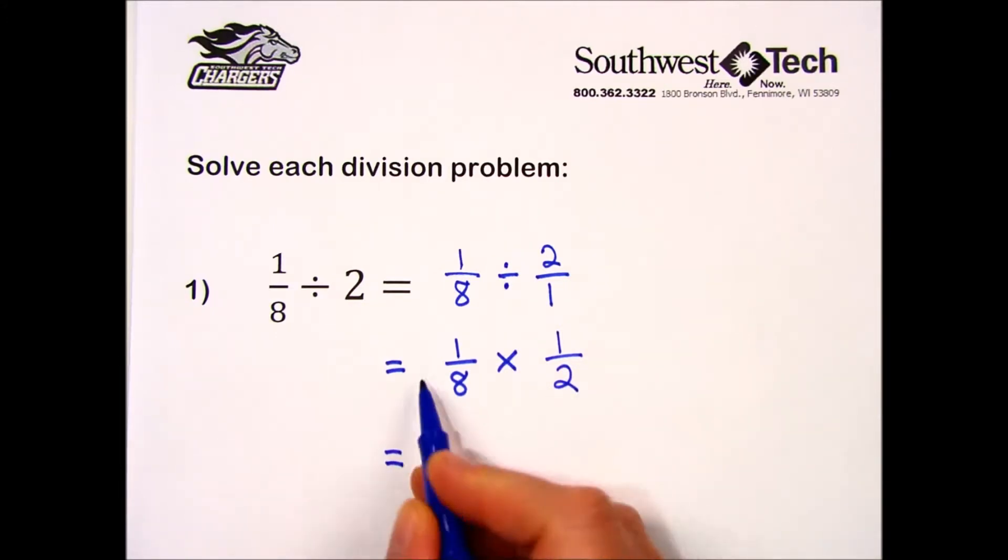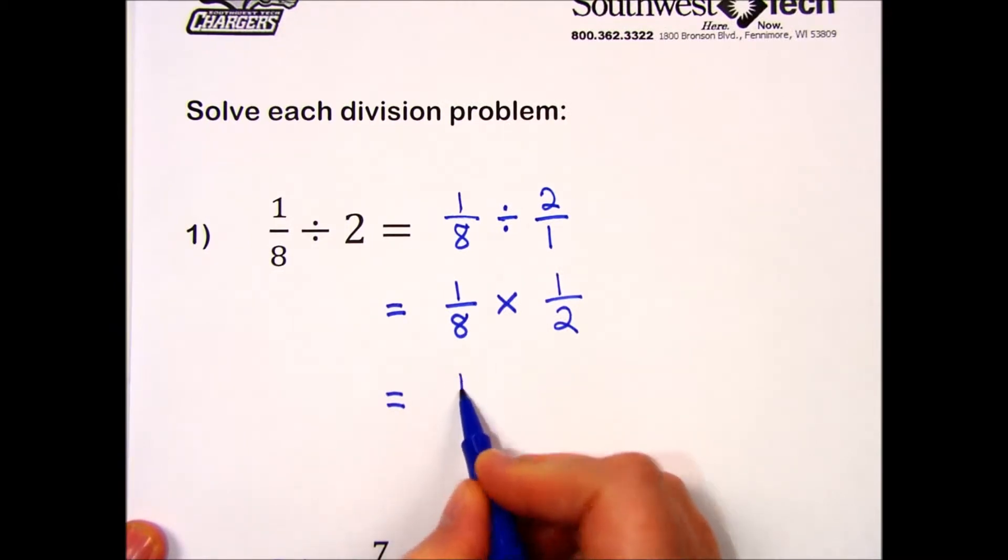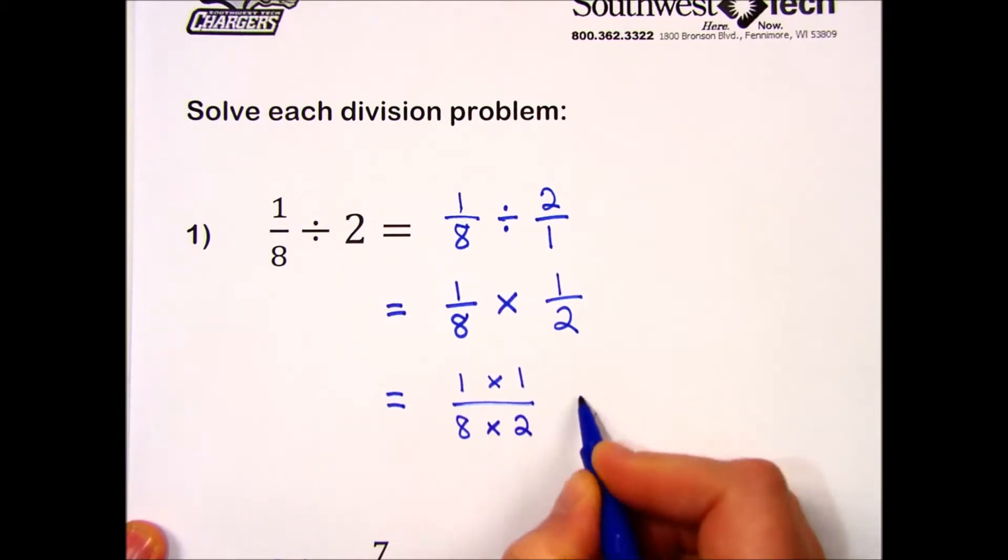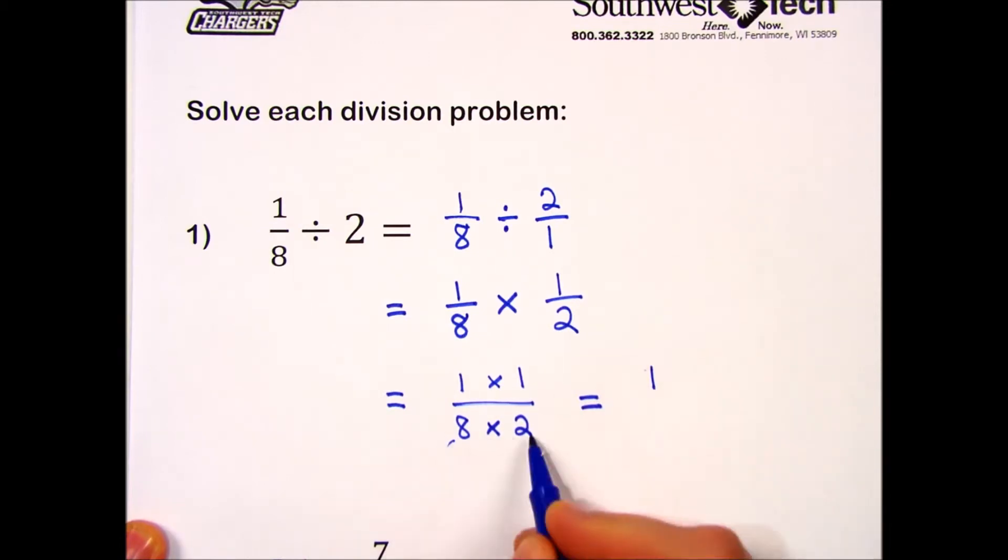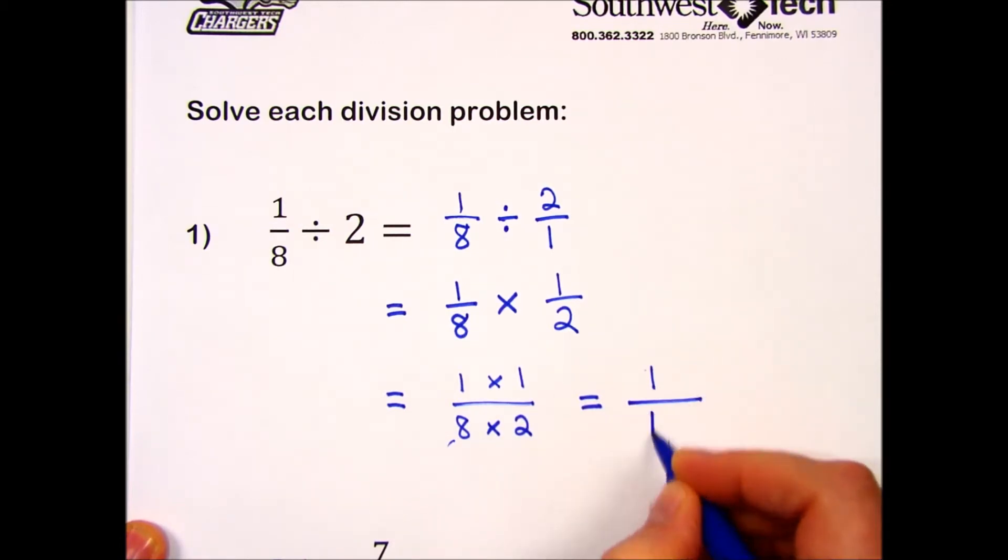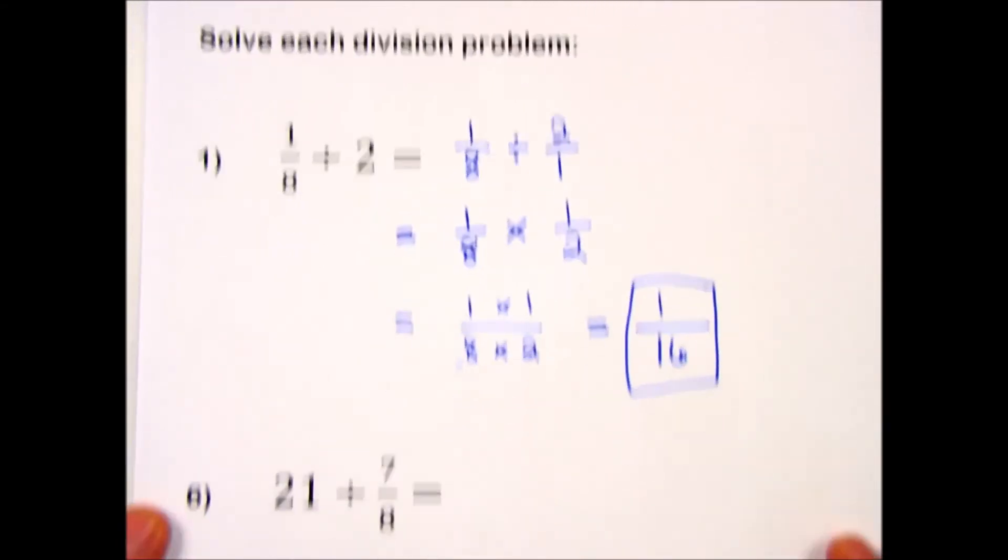At this point, I can use our multiplication rules: top times top and bottom times bottom. Perform these multiplications and I have 1 times 1 is 1, 8 times 2 is 16. That's our answer: 1/16. Let's try one more together.